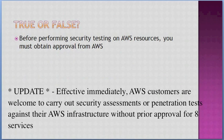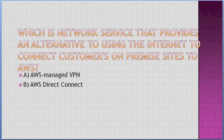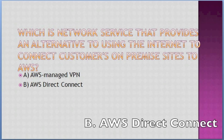Which network service provides an alternative to using the internet to connect customers' on-premise sites to AWS? Options: A. Managed VPN, B. AWS Direct Connect. Answer: B — AWS Direct Connect.